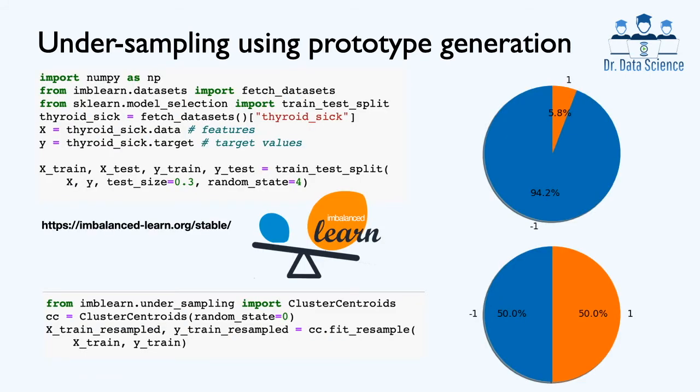To implement this technique, we can use ClusterCentroids from the ImbalancedLearn library. This method allows us to balance the number of samples per each class. And as we see here, using np.unique similar to before, we can make sure that the class distribution is one to one.